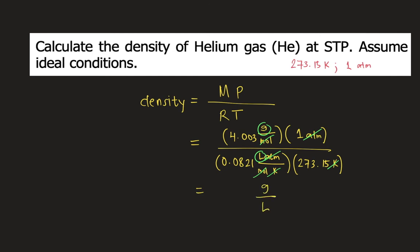And if you solve this in your calculator, you will compute that the density of helium at STP is equal to 0.179 grams per liter. And this is the answer to the question. Thank you.